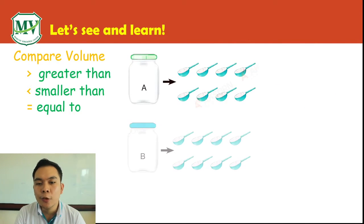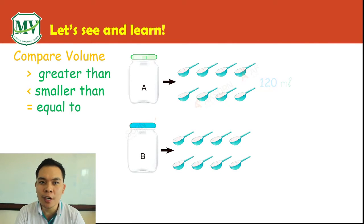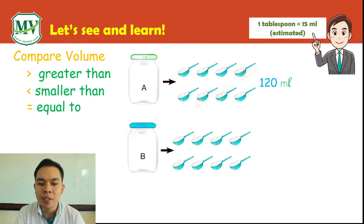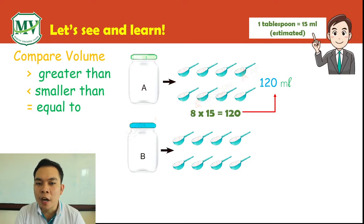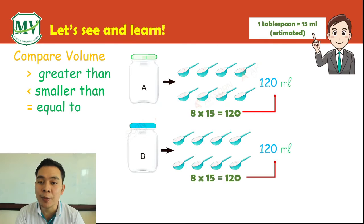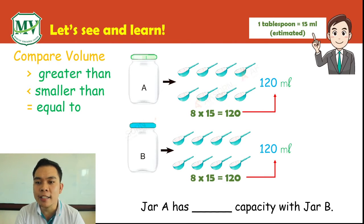Look at these containers. Jar A, when full, contains 8 tablespoons or 120 milliliters. Remember: 1 tablespoon is equal to 15 milliliters as estimated, so 8 multiplied by 15 equals 120 milliliters. Now Jar B, when full, also contains 8 tablespoons or 120 milliliters. Jar A has blank capacity compared to Jar B.